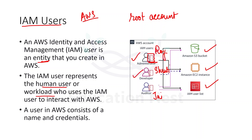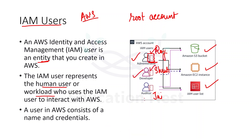We roll out permissions by attaching policies to users. We will be creating three users: Roy, Shruti, and Jai. By default, when you create users, they do not have any permissions — you have to attach policies to give them permissions. Roy will have permissions to access all three resources, Shruti will only be accessing EC2, and Jai will be accessing the S3 bucket and IAM user list.